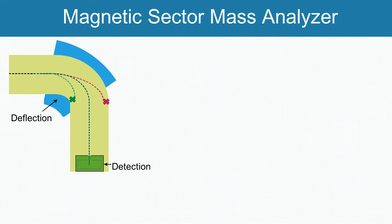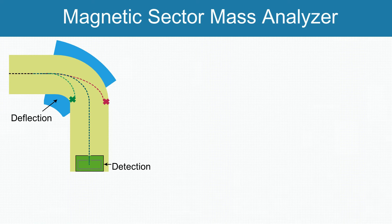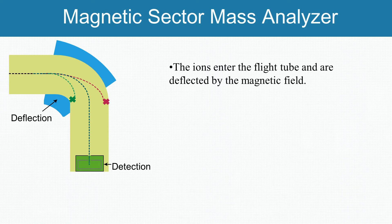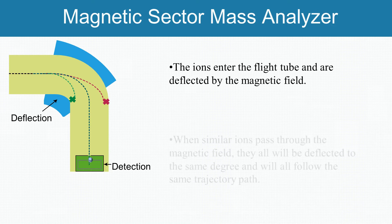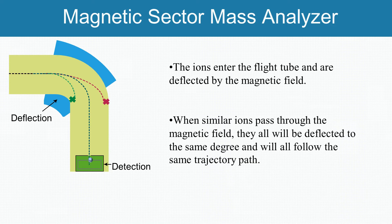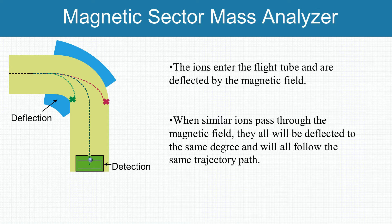In magnetic sector mass analyzer, ions are accelerated so that they have the same kinetic energy. All the ions are accelerated into a focused beam, and then the ions are deflected by the magnetic field according to masses of ions. The lighter ions have more deflection than the heavier ones. The amount of deflection depends on the number of positive charges. When similar ions pass through the magnetic field, they all will be deflected to the same degree and will all follow the same trajectory path. Those ions which are not selected will collide with either side of the flight tube wall or will not pass through the slit to the detector.